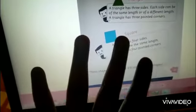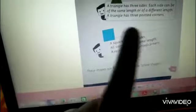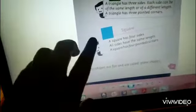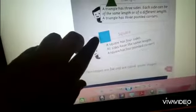So a square has four pointed corners and four sides. And all the sides have the same length. Okay?